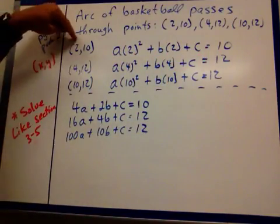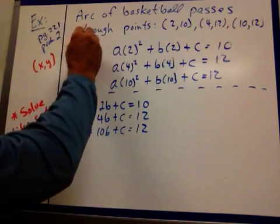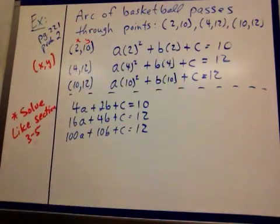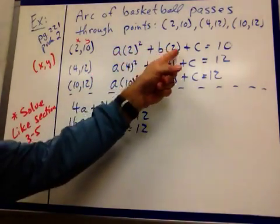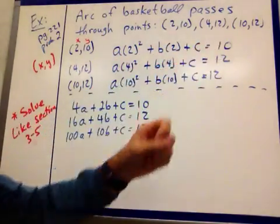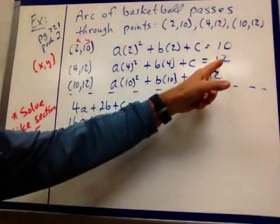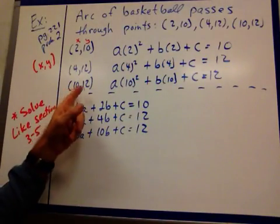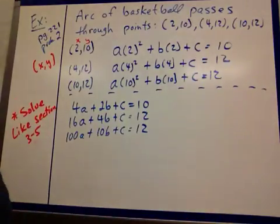So I take the first point 2,10. So here is my x, here is my y, and I plug them into the standard form. ax squared plus bx plus c equals my y, which is 10. So I put my 2's in for my x's, my 10 in for my y. The point 4,12, there's my 4 in for the x's, 12 for the y. The point 10,12, put my 10 in for the x's, my 12 in for my y.